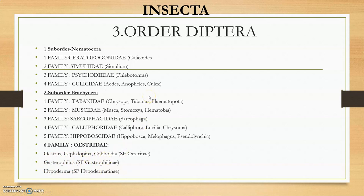To summarize: under order Diptera we have suborder Nematocera and suborder Brachycera. Oestridae is highlighted because it is very important. Under suborder Brachycera we have 6 families, and under suborder Nematocera we have 4 families — so 10 families total present under order Diptera.